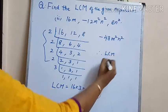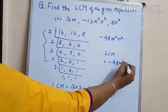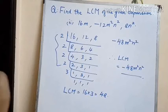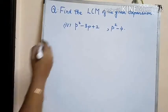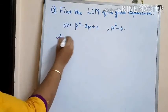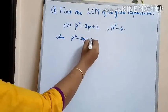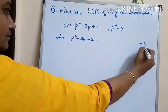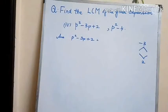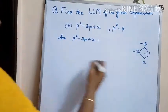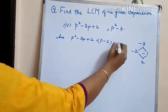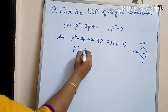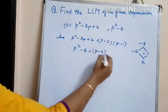Let us consider one more problem. Here we have p squared minus 3p plus 2 and p squared minus 4. The polynomial p squared minus 3p plus 2 can be split into factors p minus 2 and p minus 1. The polynomial p squared minus 4 can be split into p minus 2 into p plus 2.